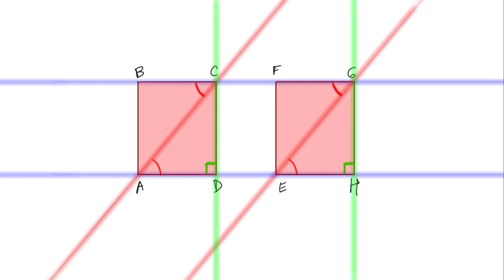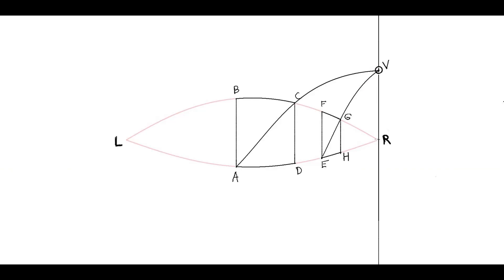But again, this all depends on you accepting that V is the vanishing point of the first diagonal. Why is this true?